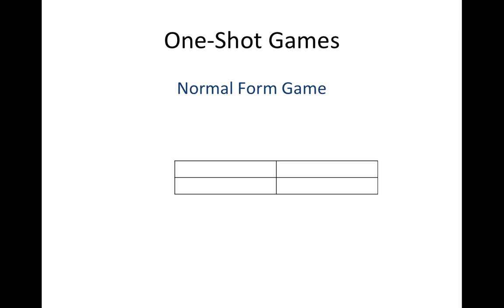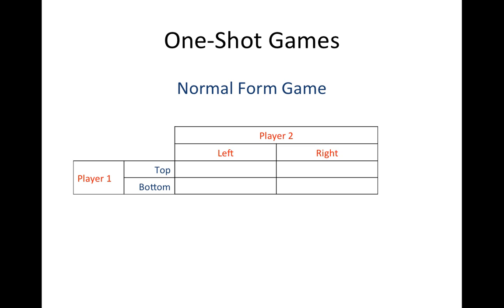If we consider a simple two-player, one-shot game in which each player has two possible actions, then we can represent the game using a 2x2 table. Normally, we will list one player's actions in the rows of the table, and we put the other player's actions in the columns of the table. We then fill in the cells of the table with each player's earnings from each action that they can take.